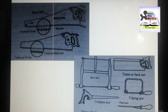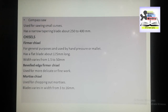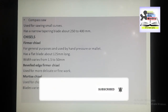Here is the figure for the compass saw. Next we have another cutting tool — the chisel. The wood chisels most commonly used include the firmer chisel, beveled edge chisel, and mortise chisels. Chisels are usually specified by the length and width of the blade.